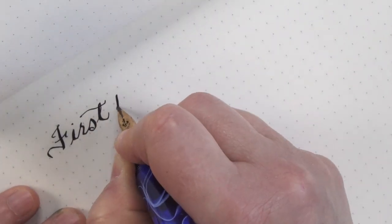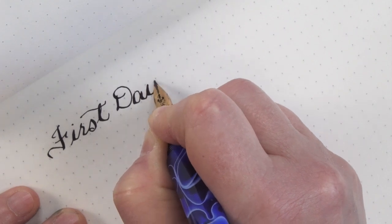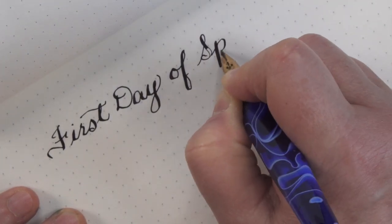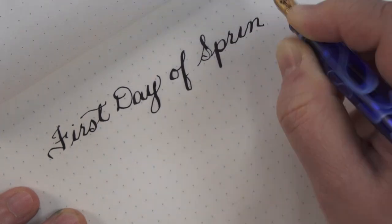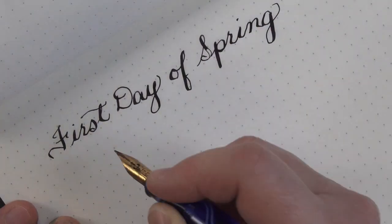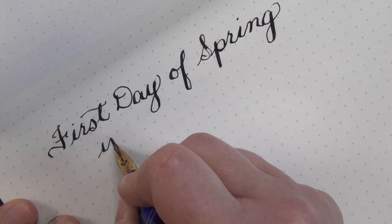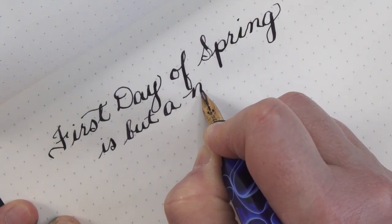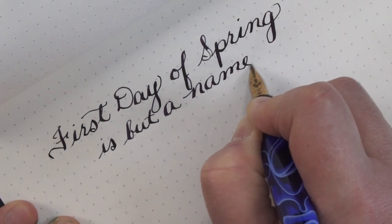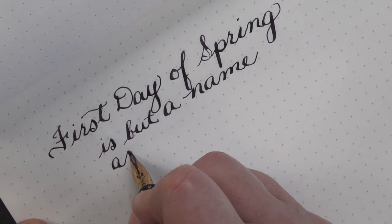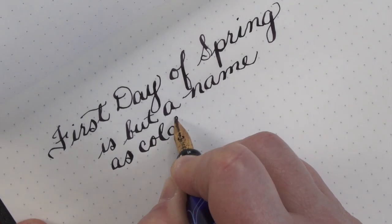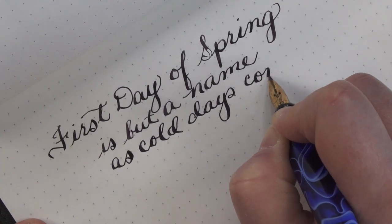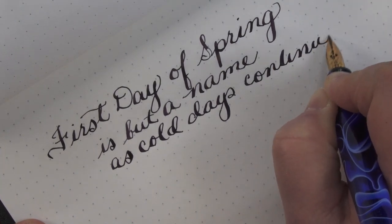The Japanese, when they write letters, it is so strict on the opening and closing that they have this intro line for every month of the year. So I'll read you the Japanese one: "Risshun to wa na bakari de samui hi ga tsuzuite orimasu ga," which means the first day of spring is but a name as cold days continue. And that would be what you would write at the beginning of your letter when you're writing in the month of February.